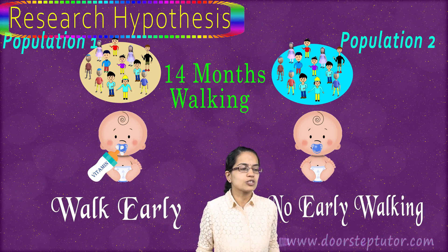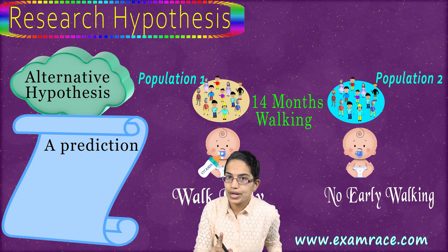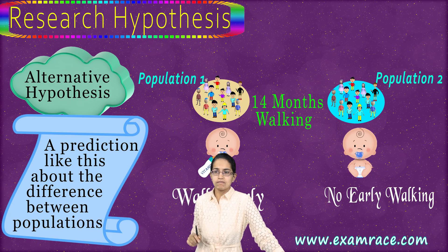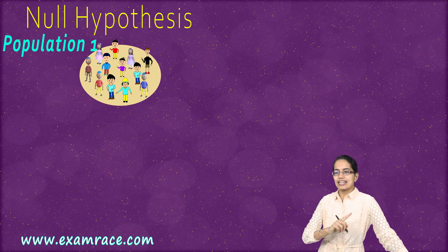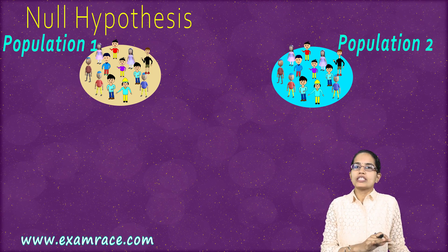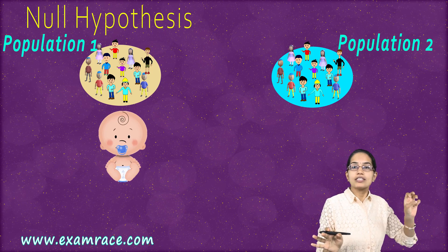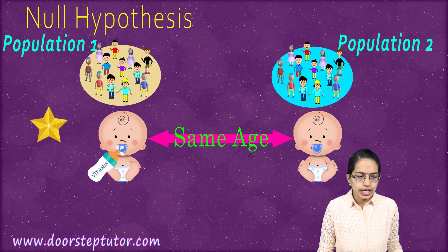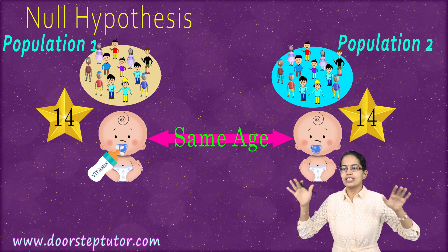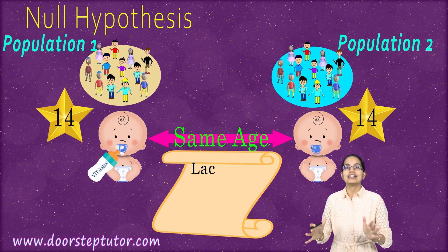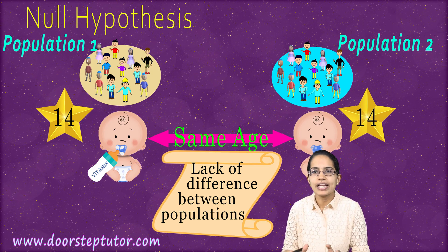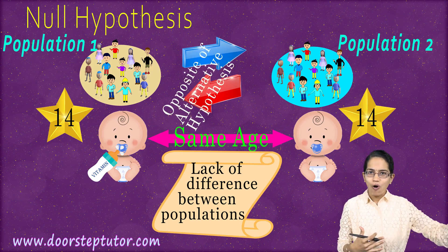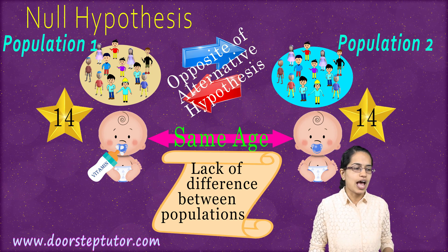Under research hypothesis, also known as alternative hypothesis, we predict that there is a difference between the populations, because of which there is variation in the results seen. In the second case, we predict that be it population 1 or population 2 — whether babies are consuming a vitamin dose or not — both start to walk at the same age. This means there is a lack of difference in the population; my findings remain the same for population 1 as well as population 2. This is the opposite of the research hypothesis, and hence is known as the null hypothesis.